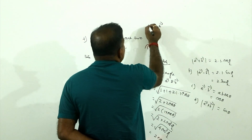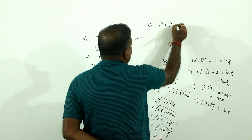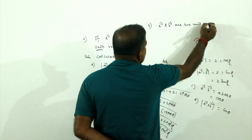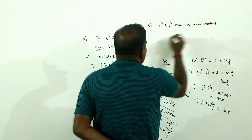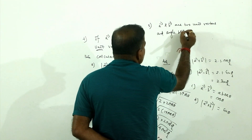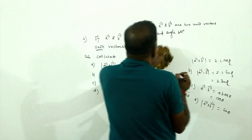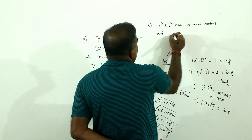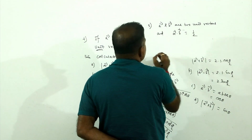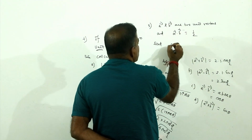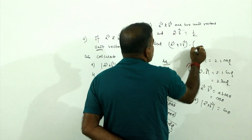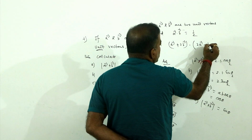Question number 5: vector A and vector B are two unit vectors, and A·B equals one half. Find the value of (A plus 2B) dot (2A minus B).